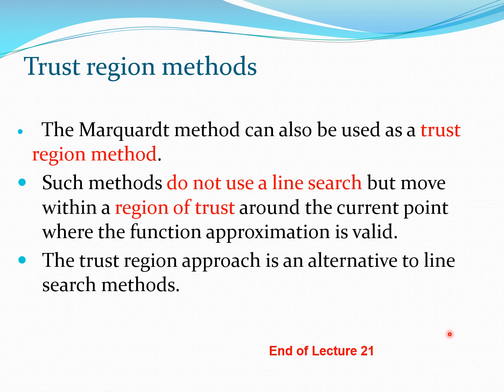Some people also call this method the Levenberg-Marquardt method. It is often used in least-squares functions and is a very easy method to code. If you have already written code for the Newton method and the steepest descent method, it is quite easy to write code for the Marquardt method. The negative side is that the Hessian matrix needs to be calculated at each iteration k, which is computationally expensive. However, if you are dealing with test functions in closed form, you can certainly use this method. In the next video, we will start looking at the quasi-Newton methods.